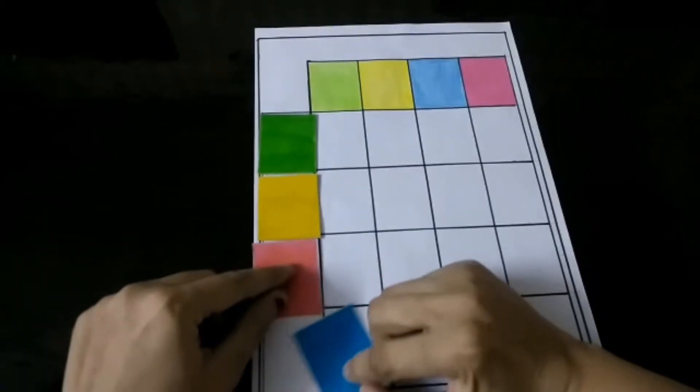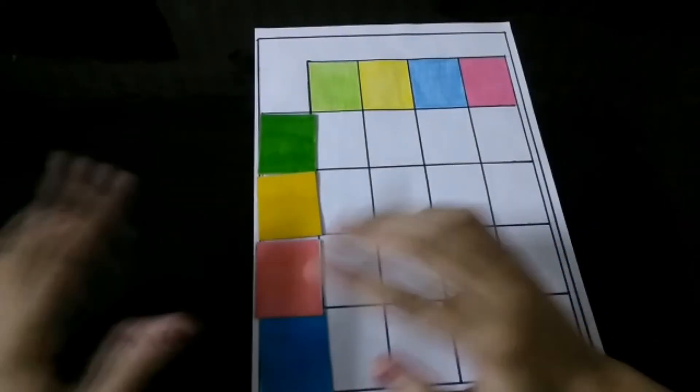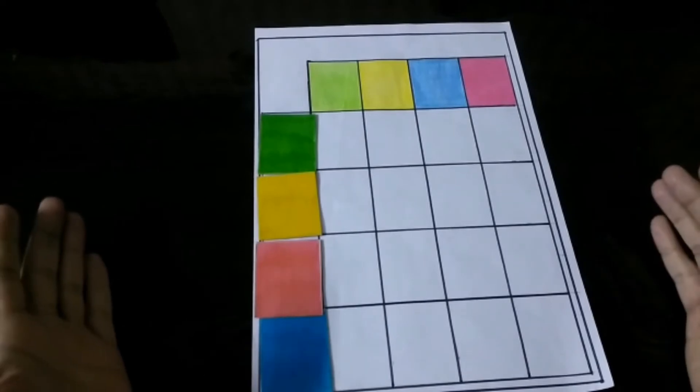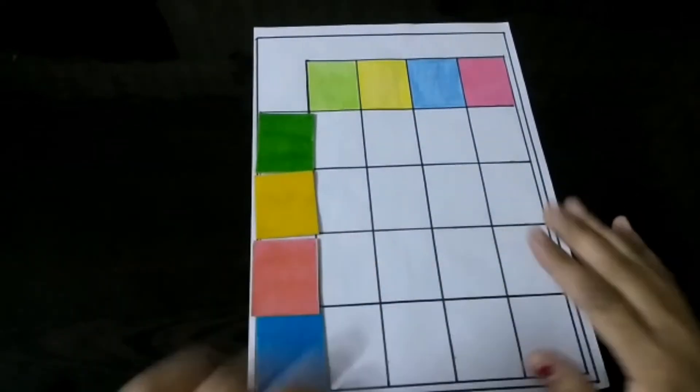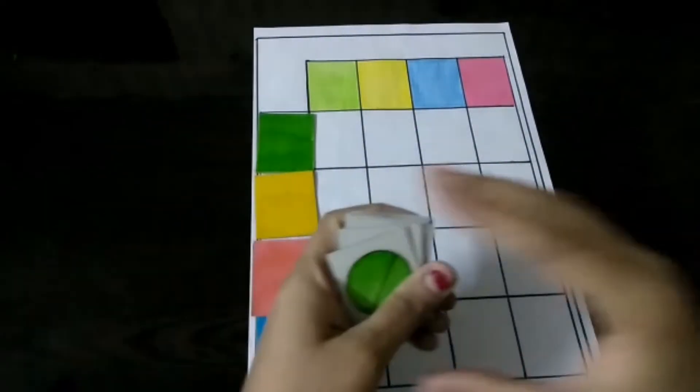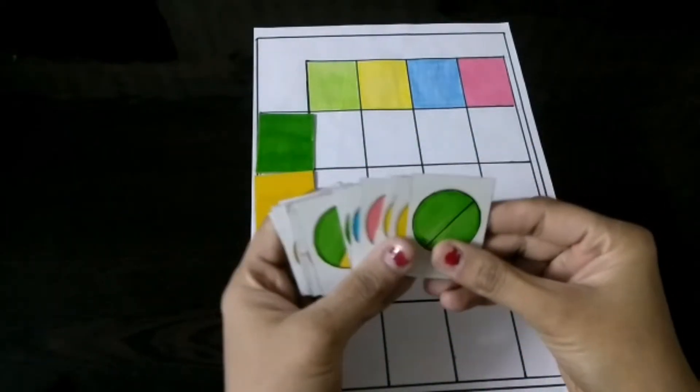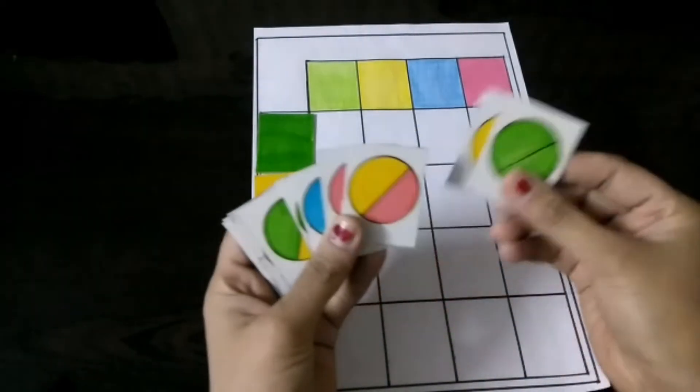that you can shuffle them and you can use them multiple times with your child. So along with that, I have made some more cardboard shapes here. These are in the circle shape.